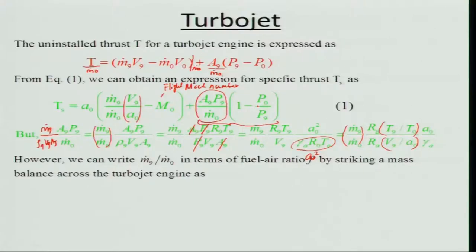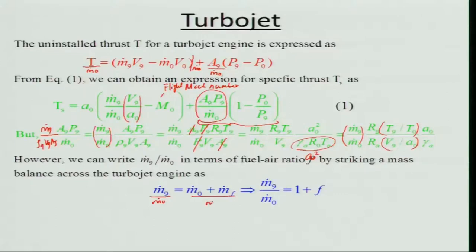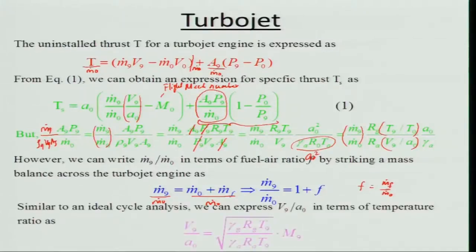We can write ṁ_9/ṁ_0 in terms of the fuel-air ratio by striking a mass balance across the turbojet engine. ṁ_9 = ṁ_0 + ṁ_F, so dividing by ṁ_0 gives ṁ_9/ṁ_0 = 1 + f, where f = ṁ_F/ṁ_0 is the fuel-air ratio, which we already know.